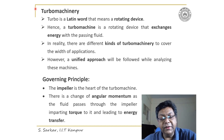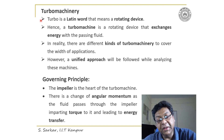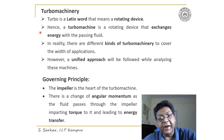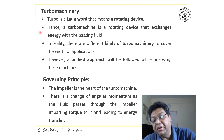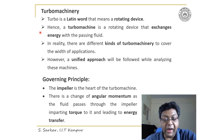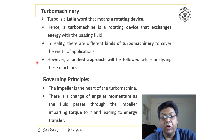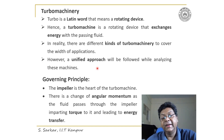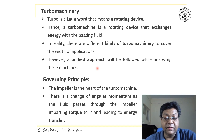The origin of the word Turbomachinery is 'Turbo.' Turbo is a Latin word that means a rotating device. Hence, a turbomachine is a rotating device that exchanges energy with the passing fluid. There are different kinds of turbomachines to cover the wide range of applications. A unified approach will be followed while analyzing these machines, as the central governing principle of different kinds of turbomachines is the same.